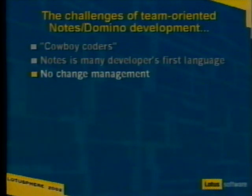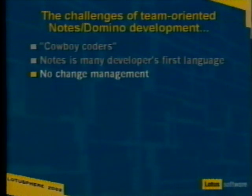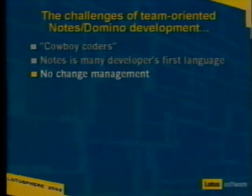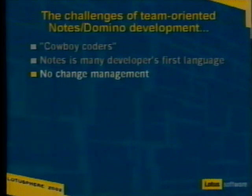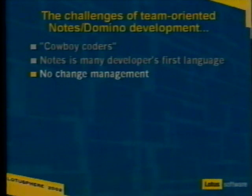Another thing that's been harder in the past but R6 will make better is change management. Notes doesn't inherently have change control. It's a very polymorphous data store that replicates around the world, but it's very easy for Joe to step on Sam's changes. Lotus and IBM are only now getting around to some rudimentary change management. The change management coming in Notes 6 is still only at the object level — no version control, no parallel development paths, no branching.